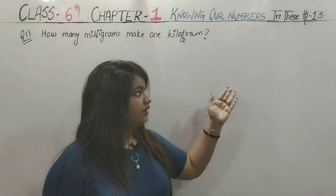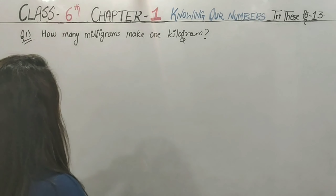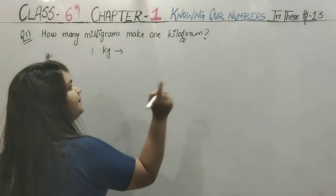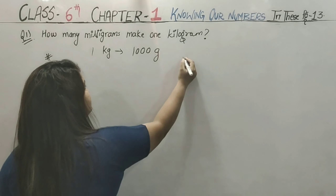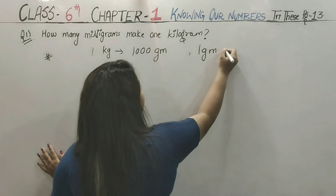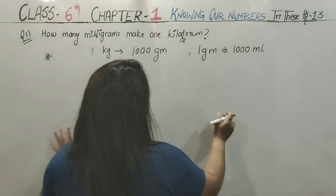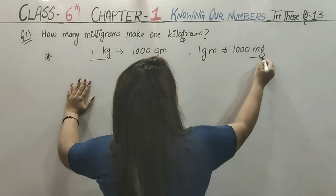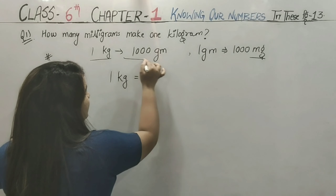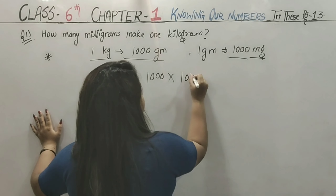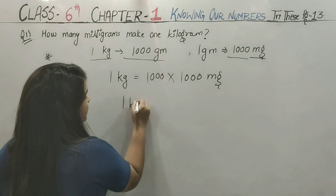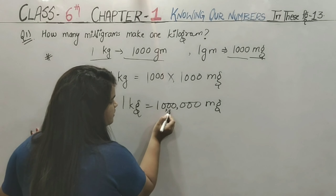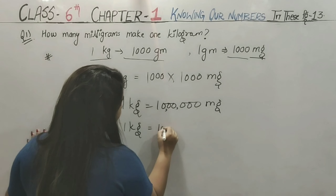Now try page number 13. The first question asks: how many milligrams make 1 kilogram? First, 1 kilogram equals 1,000 grams, and 1 gram equals 1,000 milligrams. So 1 kilogram has two jumps of 1,000, meaning we multiply 1,000 by 1,000. That gives six zeros, which is 10 lakh. So 1 kilogram equals 10 lakh milligrams.